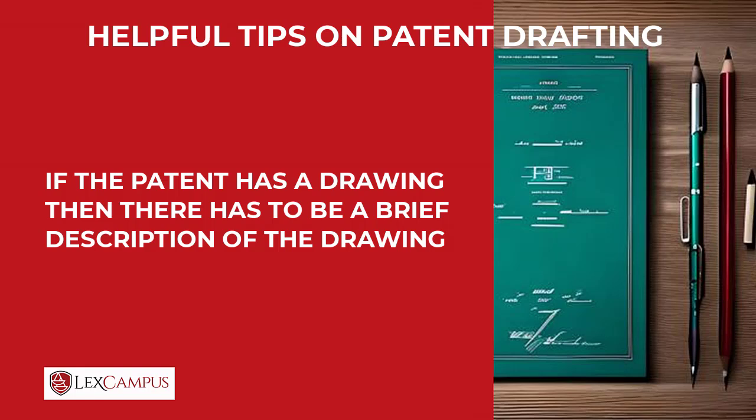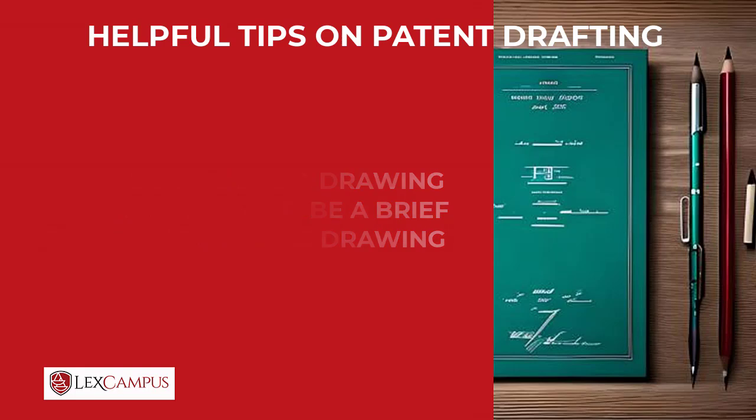You also have to have a description of the parts. If something is numbered as part one, two, three, and four in the drawing, you will have to read the disclosure that is given. There will be a limited disclosure which will be given, and you will have to describe that. So wherever you see a drawing, there are three things that you will do.